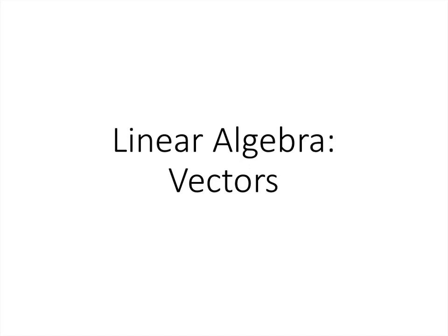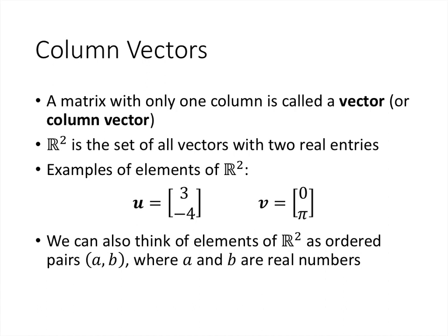In this lecture, we'll talk about basic definitions and operations on vectors. For this class, a vector is a matrix that has only one column, and sometimes we'll just call that a column vector. You may have seen vectors in other contexts, like physics or multivariable calculus, but for our purposes we're thinking of a vector as being just a single column of a matrix.